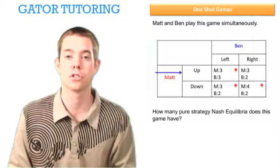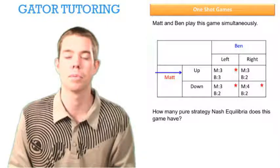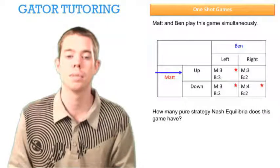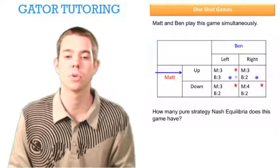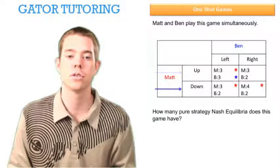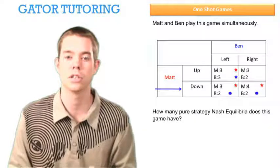Now for Ben we're going to look at Matt's different options. Matt can either choose up or down. When Matt chooses up, Ben's choosing between three and two. He likes three better. And when Matt chooses down, Ben's choosing between two and two. Well he's indifferent between two, so we star both of those.